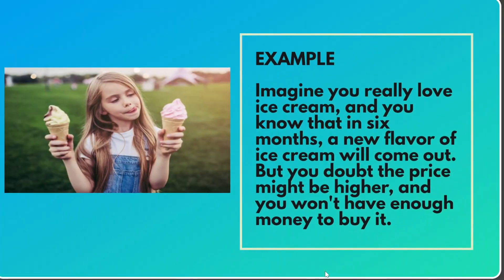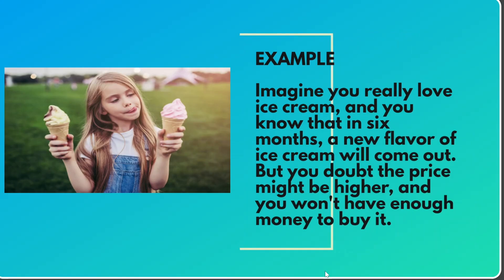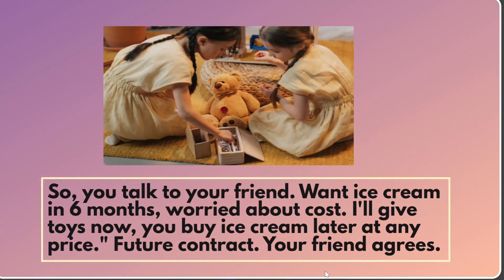Example: Imagine you really love ice cream, and you know that in 6 months a new flavor of ice cream will come out. But you doubt the price might be higher, and you won't have enough money to buy it. So you talk to your friend: 'I want ice cream in 6 months, worried about cost — I'll give you toys now, and you buy me ice cream later at any price.'